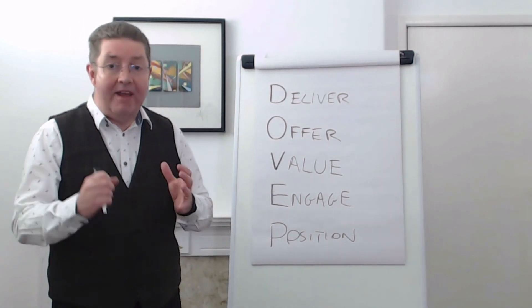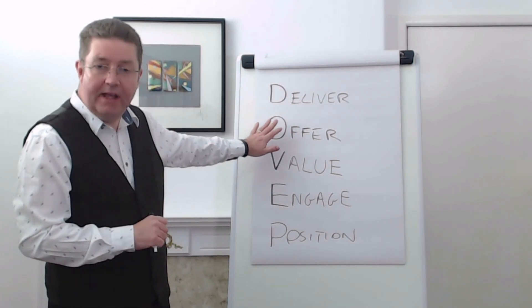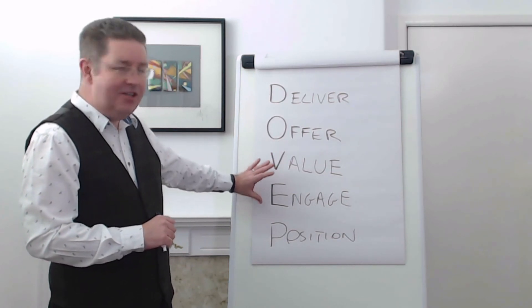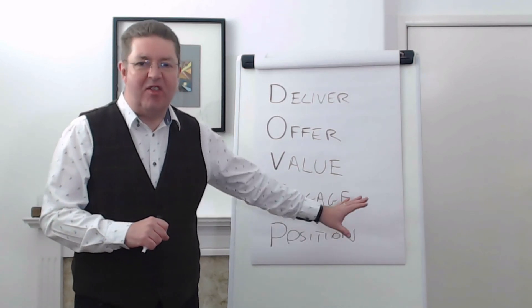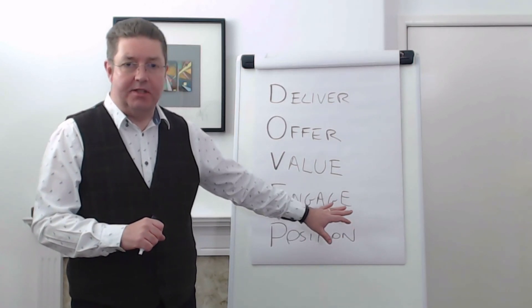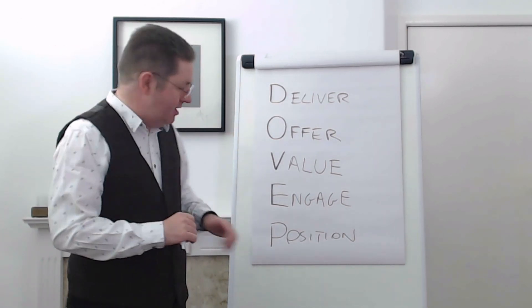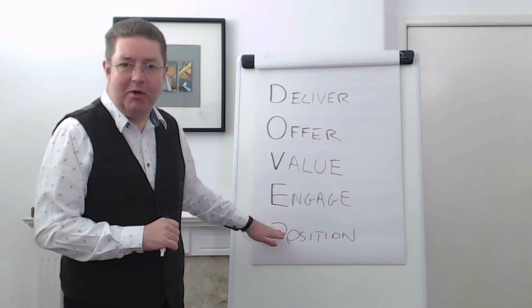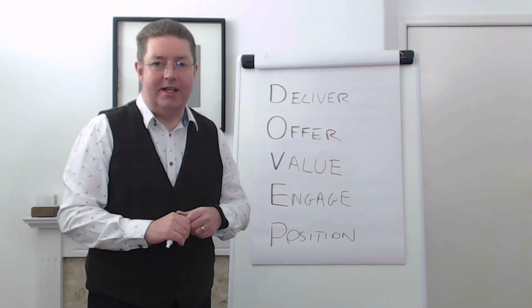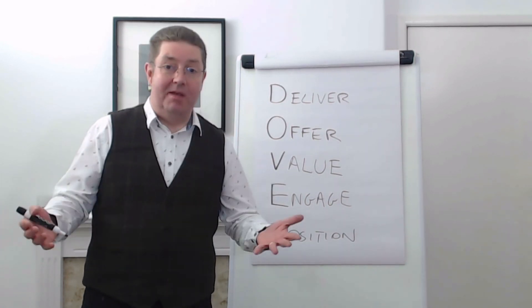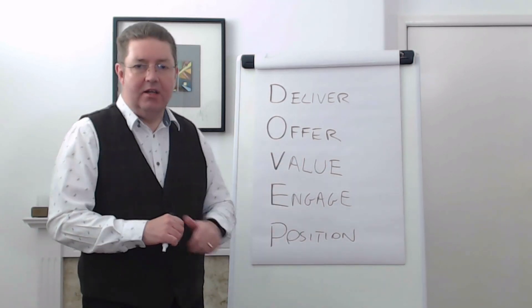Those are the big five things to think about whenever you're writing an autoresponder sequence: deliver on what you promised, make an offer if that's appropriate, always be delivering value and engaging as you go through in every email, and think about your positioning—what you want them to think about you by the end of the sequence. You're building credibility, trust, and a relationship. What is that relationship you want to build? Do you want to be seen as the gray-haired expert, the genius with brilliant ideas, a fun person to work with—maybe all three, maybe not—but see how you can get that across.